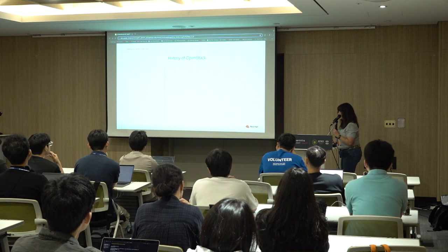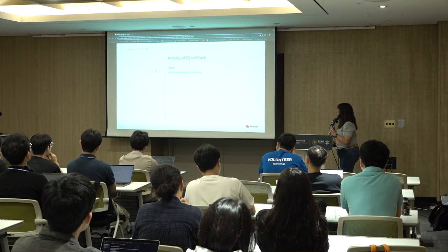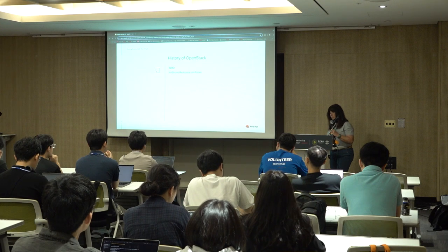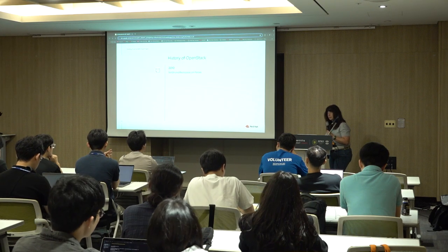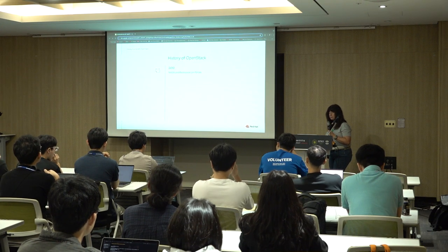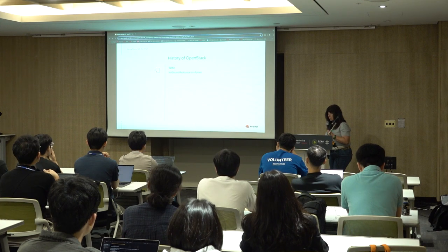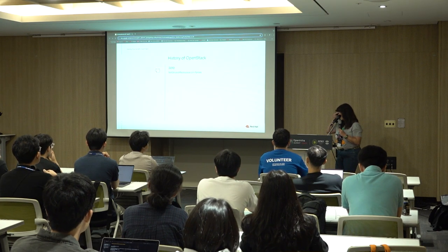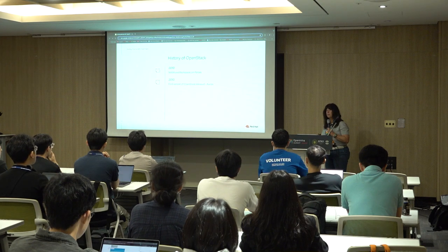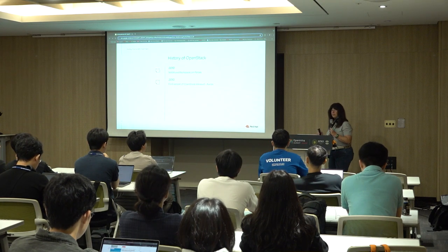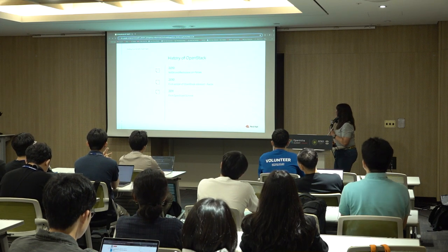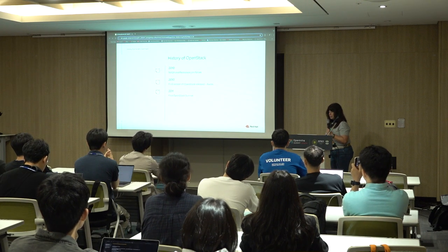A little bit about the history of OpenStack. The project began in 2010 due to a cooperation between NASA, who was working on an open-source compute project called Nova, and Rackspace, who had an open-source object storage platform called Swift. Not surprisingly, with Rackspace being based in San Antonio, the first release was Austin. And in 2011, there was the first OpenStack Summit, which took place in San Antonio.